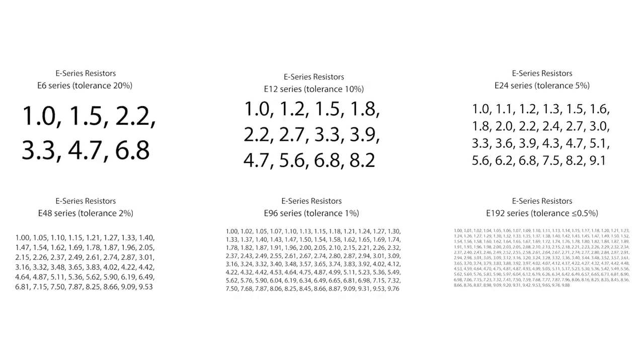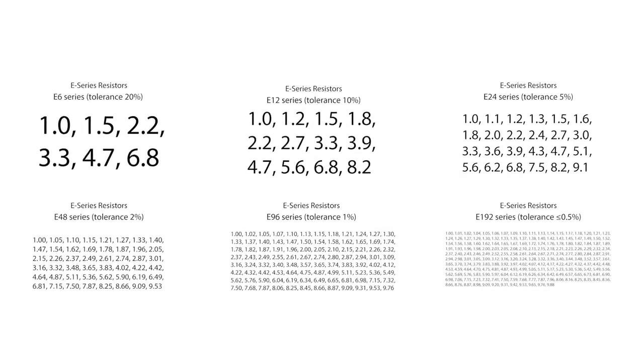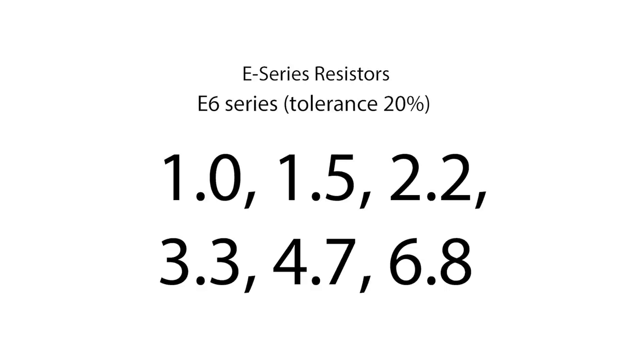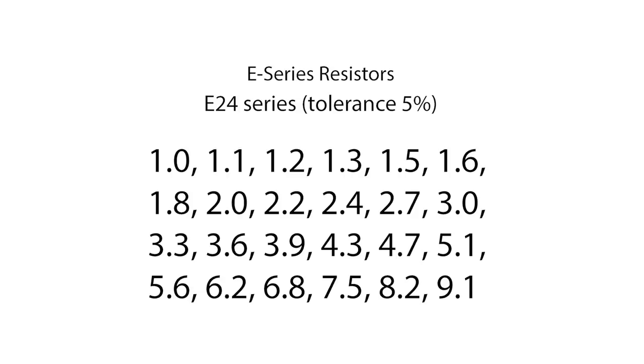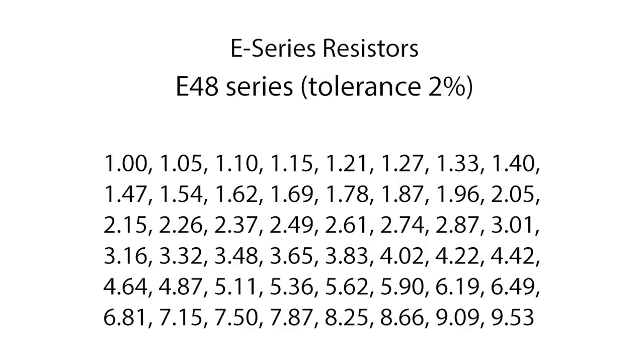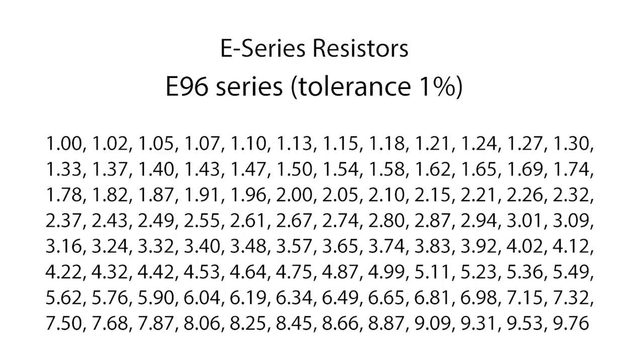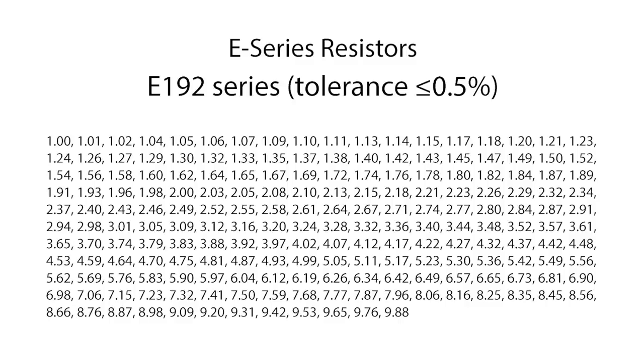Each series is named for how many values fall between 0 and 10. E6 has six values between 0 and 10, and one of the lowest tolerances at 20%. E12 has a tolerance of 10%, E24 5%, E48 2%, E96 1%, and E192 has tolerances lower than 1%.